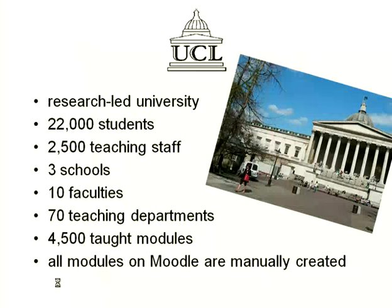I'd just like to start by giving you a bit of background about UCL. It's a research-led university. We have 22,000 students, 2,500 teaching staff, 3 schools, 10 faculties, around 70 teaching departments, and 4,500 taught modules. Today we're talking about how we go into a total Moodle for all of these modules.